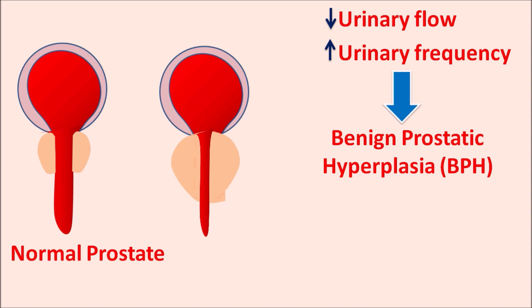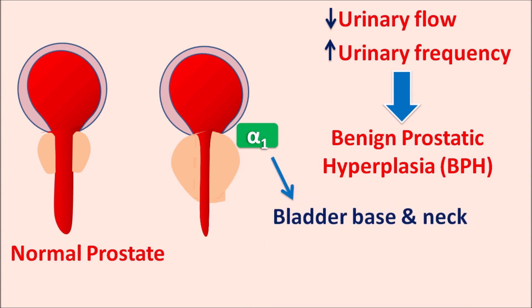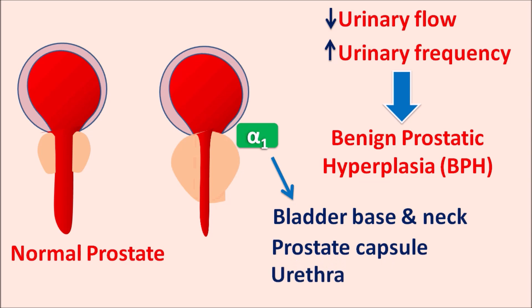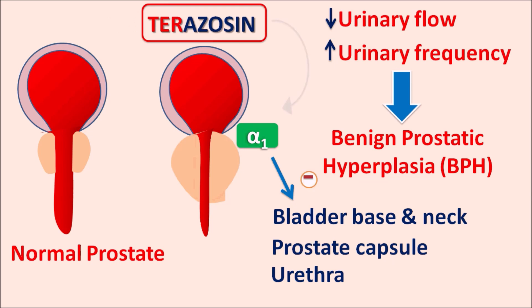In order to treat this condition we can use Terazosin. One of the targets of Terazosin is the alpha-1 receptors, which are present at the bladder base and neck, as well as on the prostate capsule and urethra. Terazosin can block these alpha-1 receptors, thereby producing relaxation at all these sites. In this way, Terazosin can increase urinary flow and decrease urinary urgency.